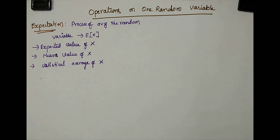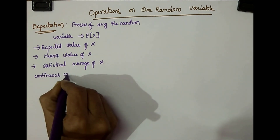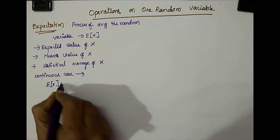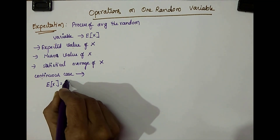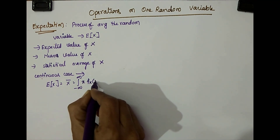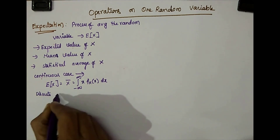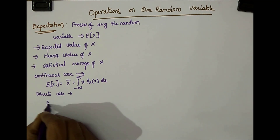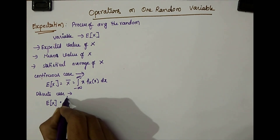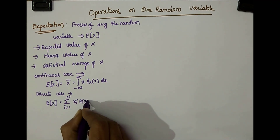How do we find this expectation? For the continuous case, the expectation formula is E(X), also represented as X-bar, equal to the integral from minus infinity to infinity of x times fx(x) dx. For the discrete case, E(X) equals the summation from i equals 1 to n of xi times P(xi).